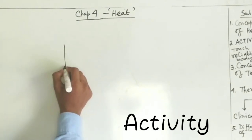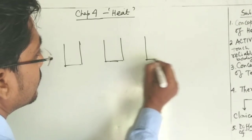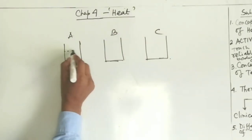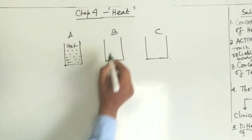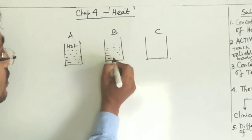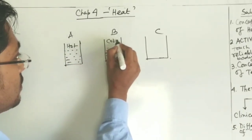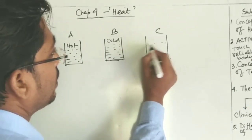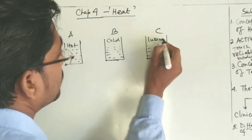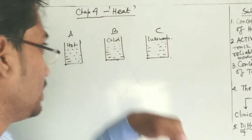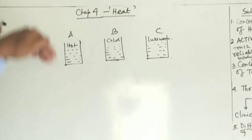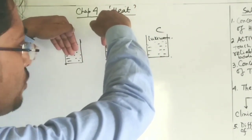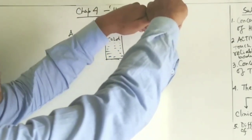In this activity, we have taken three containers — A, B, and C. Container A is filled with hot water, container B is filled with cold water with ice cubes, and container C is filled with lukewarm water at room temperature. We put our left hand in the hot water and our right hand in the cold water simultaneously, then pick both hands out and put them into container C.